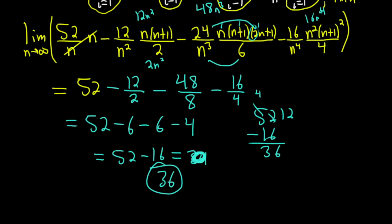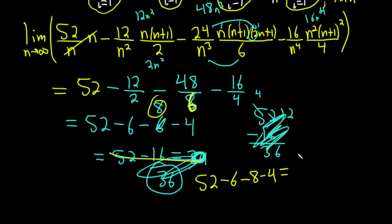But I feel like there's a mistake somewhere. I don't think this is 100% correct. So 52. Ah, there's a 6 here. This is a 6. And so this is an 8. I knew something was off. So I made a little mistake here. So this is 48 over 6. Let me use a different color here. I'm glad I caught that. So this is 48 over 6. So this is going to become an 8. So it'll be 52 minus 6 minus 8 minus 4. So it'll be 52 minus 18. So that's going to be 34.